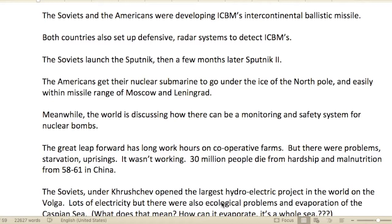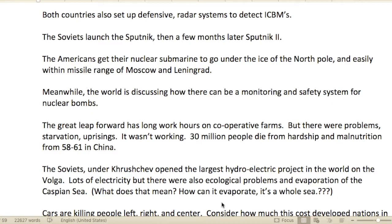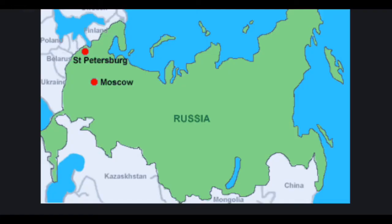The Soviets and the Americans were both developing ICBMs — Intercontinental Ballistic Missiles — and both countries set up radar systems defensively to detect them. The Soviets launched Sputnik, and then a few months later, Sputnik 2. The Americans got their nuclear submarine to travel under the ice of the North Pole, putting it easily within missile range of Moscow and Leningrad.